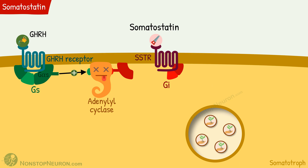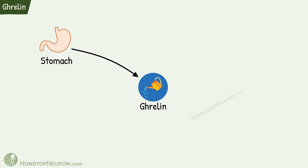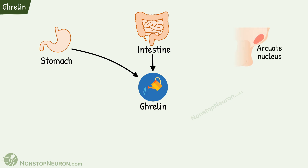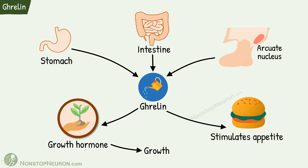An important thing to note is that when somatotrophs are exposed to both GHRH and somatostatin, the inhibitory action of somatostatin predominates. The third hormone controlling growth hormone release is ghrelin. It is mainly released by distinct endocrine cells within the mucosal layers of the stomach fundus in response to fasting, though endocrine cells throughout the GI tract can also release ghrelin, and the arcuate nucleus of the hypothalamus also makes a small amount. Ghrelin stimulates growth hormone secretion and also stimulates appetite, which indirectly contributes to growth.